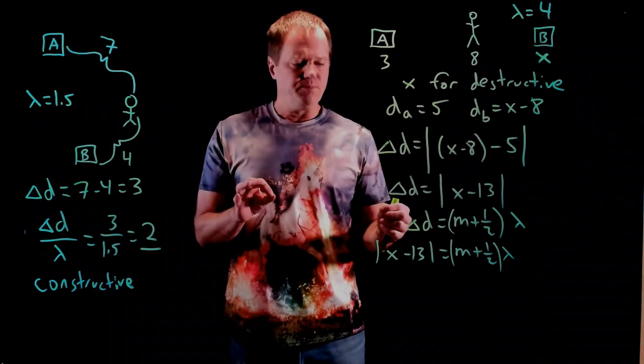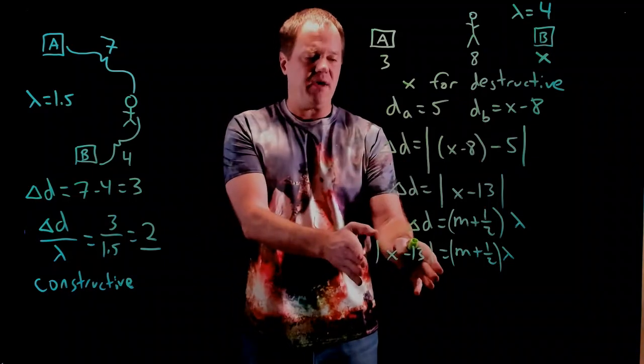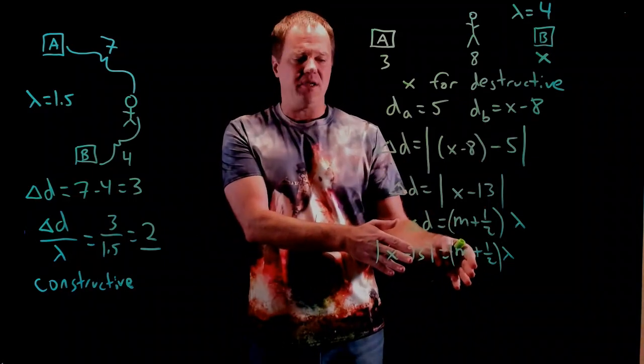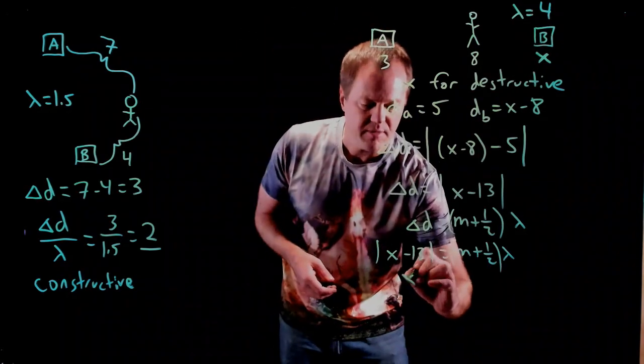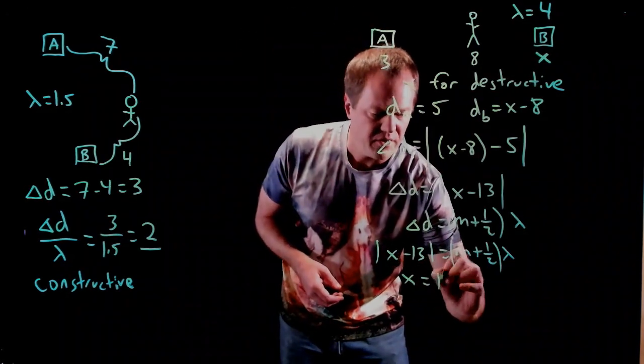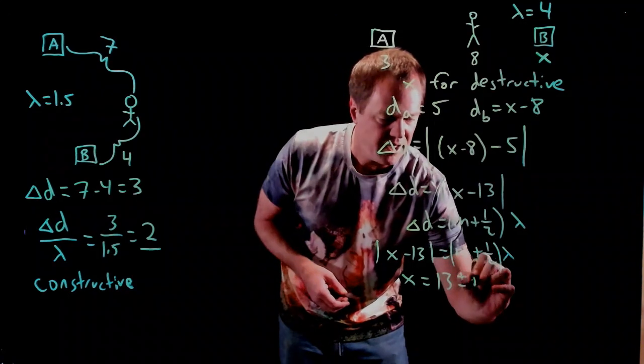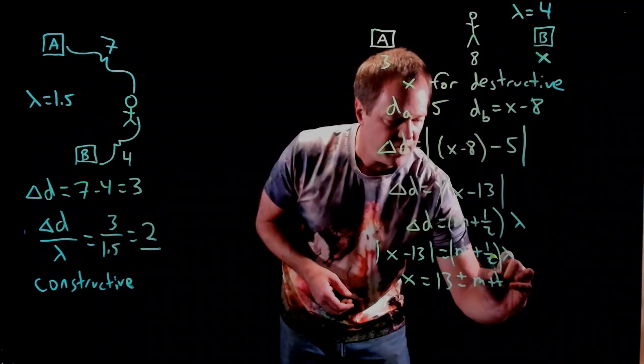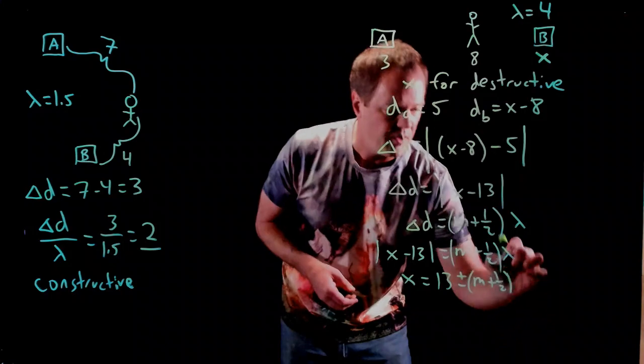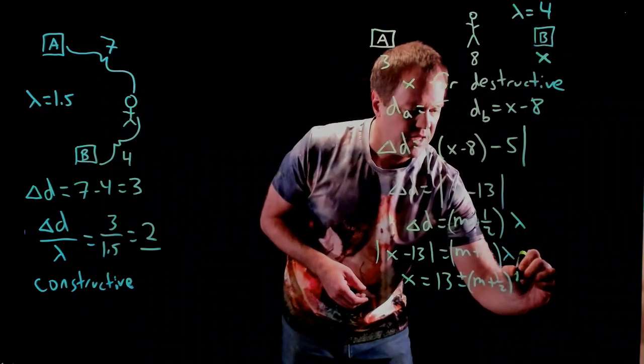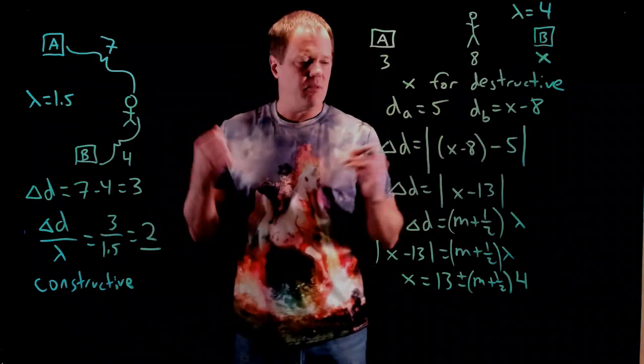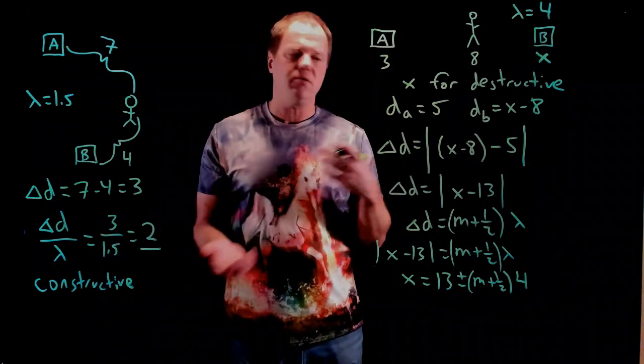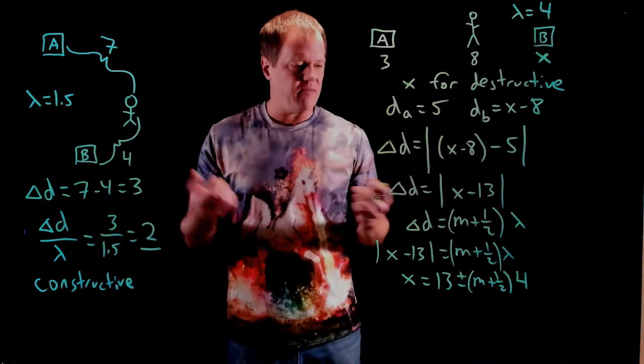We need to start ripping things away from the x. To get rid of the absolute value sign, you put a plus or minus on the other side. And then, I'm going to add 13. I get 13 plus or minus m plus one-half. And I'm just going to go ahead and throw in the number for lambda just to make our lives a little easier. And so, now, all I have to do is throw in m. I can throw in m equals zero, m equals one, m equals 17, whatever I want.